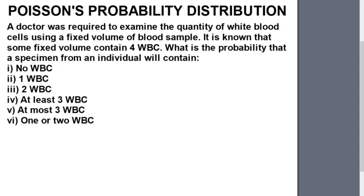Let's look at the problem we have here. The problem says a doctor was required to examine the quantity of white blood cells using a fixed volume of blood sample. It is known that some fixed volume contains 4 white blood cells. What is the probability that a specimen from an individual will contain: no white blood cells, one white blood cell, two white blood cells, at least three white blood cells, at most three white blood cells, and one or two white blood cells?